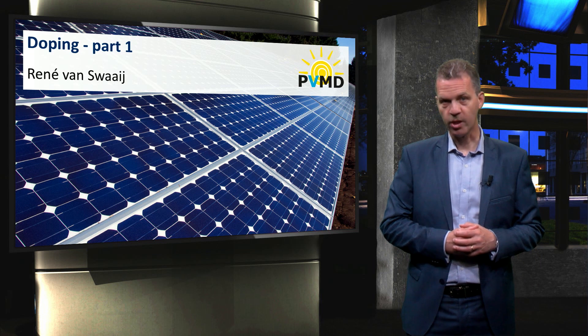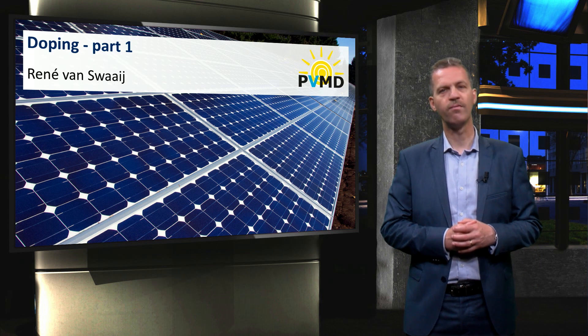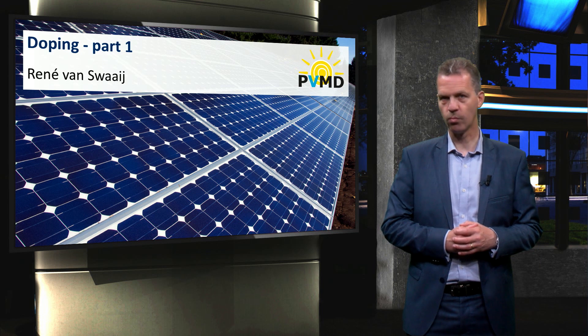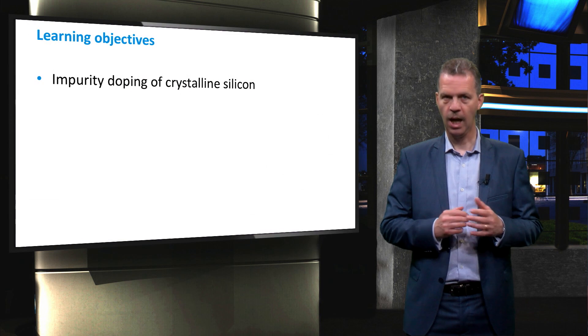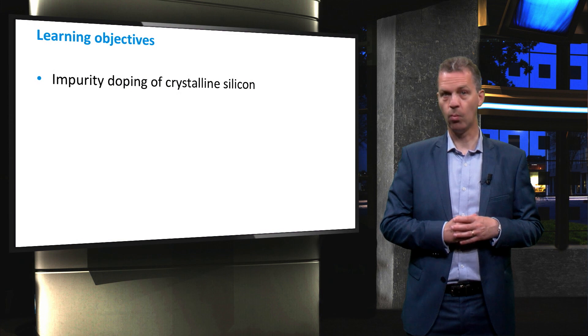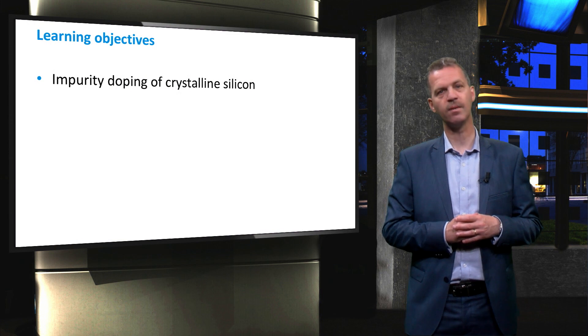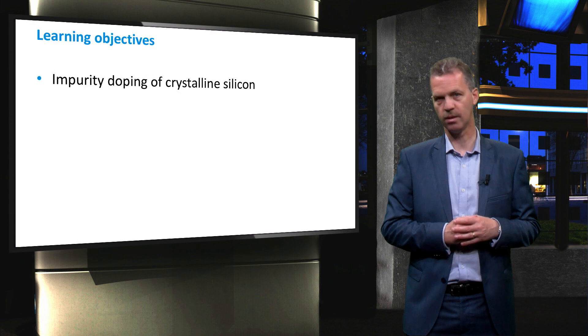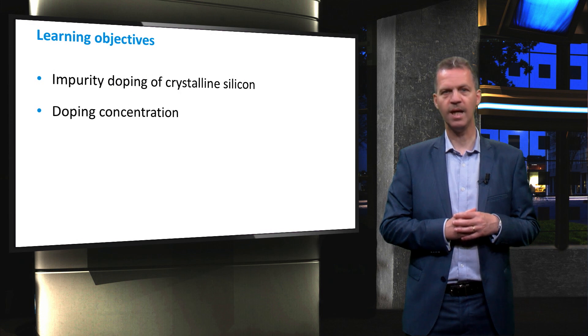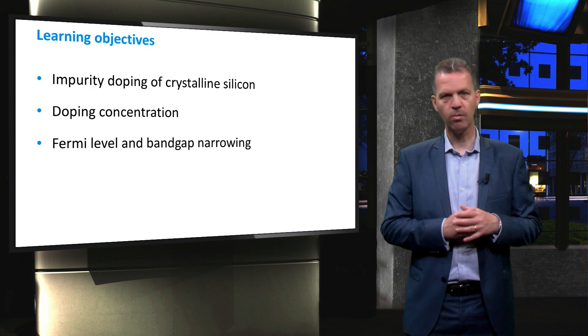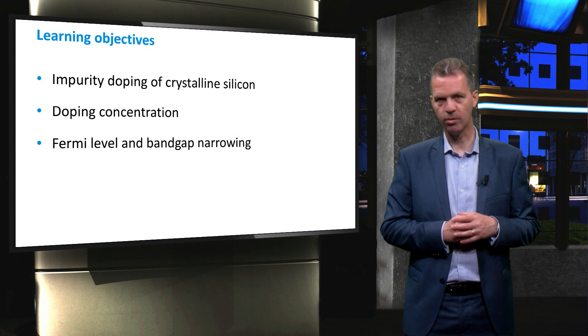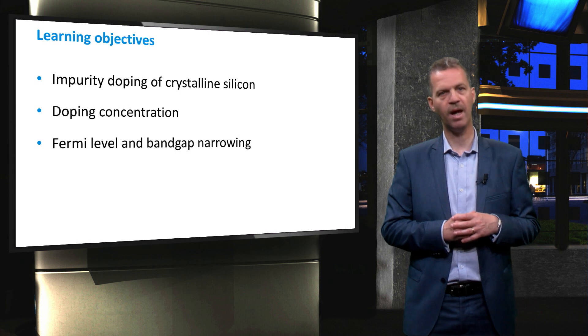We previously discussed the production process of crystalline silicon wafers, starting with quartzite as raw material and ending with electronic grade silicon. In this video we will show which elements are used to facilitate impurity doping in crystalline silicon, discuss the doping concentration and the effect on the concentration of electrons and holes, and discuss how doping affects the position of the Fermi level in the energy band diagram and the band gap of the material.